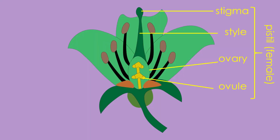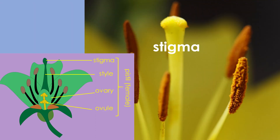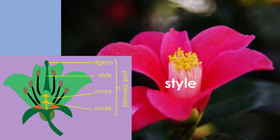Now let's take a look at the pistil. This is the female reproductive part of a flower and typically has three main parts. Stigma: the top part of the pistil that is sticky or feathery, designed to catch and hold pollen. Style: the tube-like structure that connects the stigma to the ovary. It allows pollen to travel down to reach the ovary.